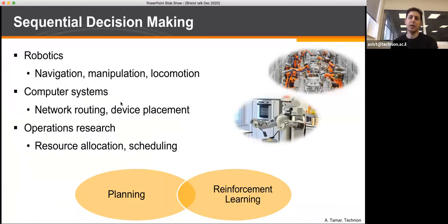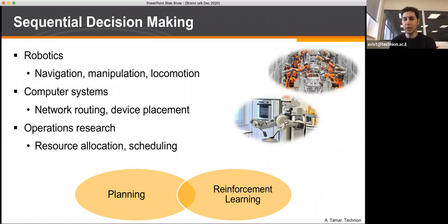The talk today is going to be about sequential decision making. This is what we need for robots to perform complex tasks like navigation, manipulation, or locomotion, but it's also relevant for many other scientific domains. For example, in computer systems we apply these ideas to network routing, device placements, and in operations research to resource allocation and scheduling.